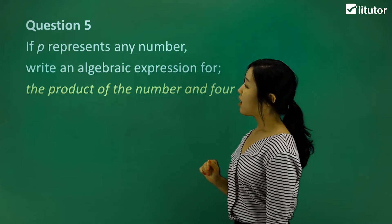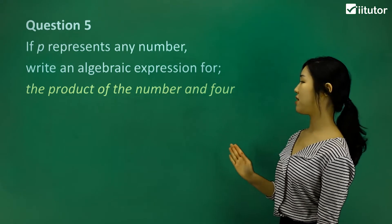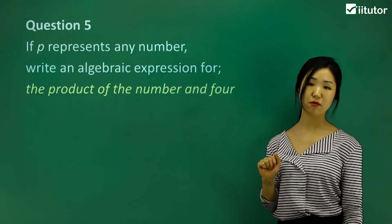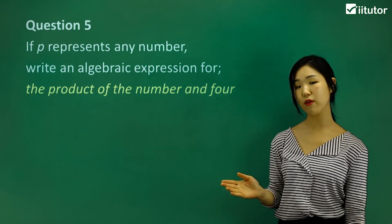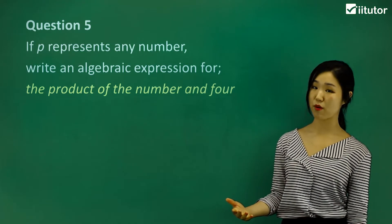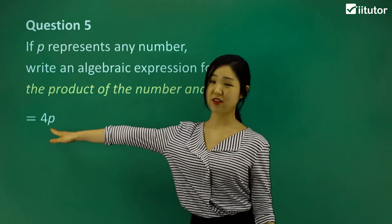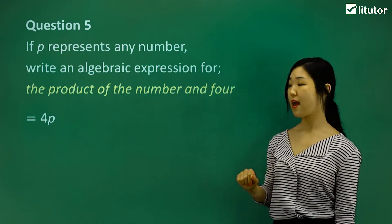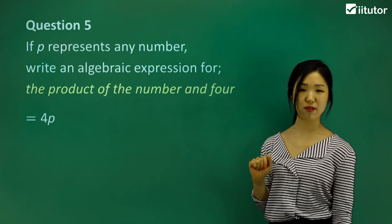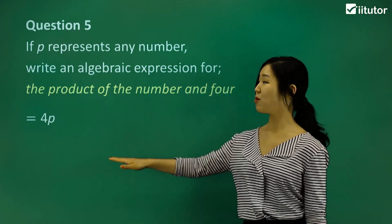Question five: if p represents any number, write an algebraic expression for the product of the number and four. The number is p, and four is a constant. Product means multiply — multiplication means product. So it's simply going to be 4p. It's better to write the constant out the front so it represents the coefficient, and then the pronumeral follows. You don't need the multiplication sign, because when there's nothing in between it simply means multiplication.